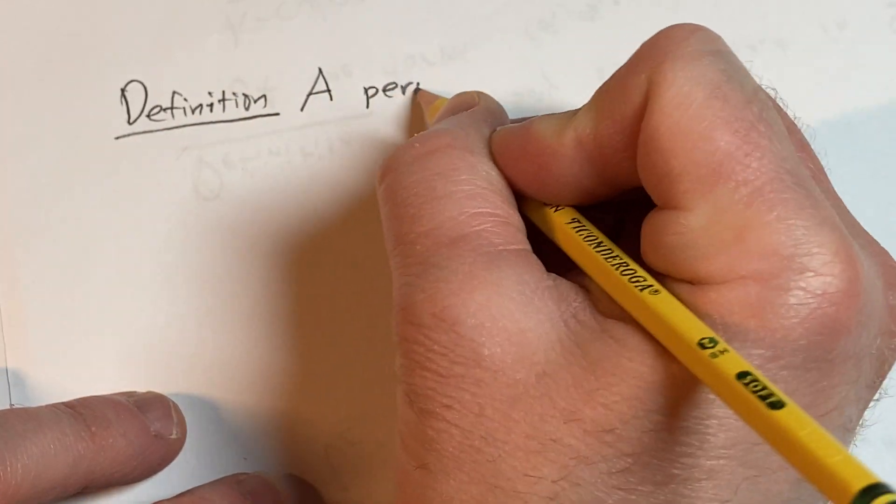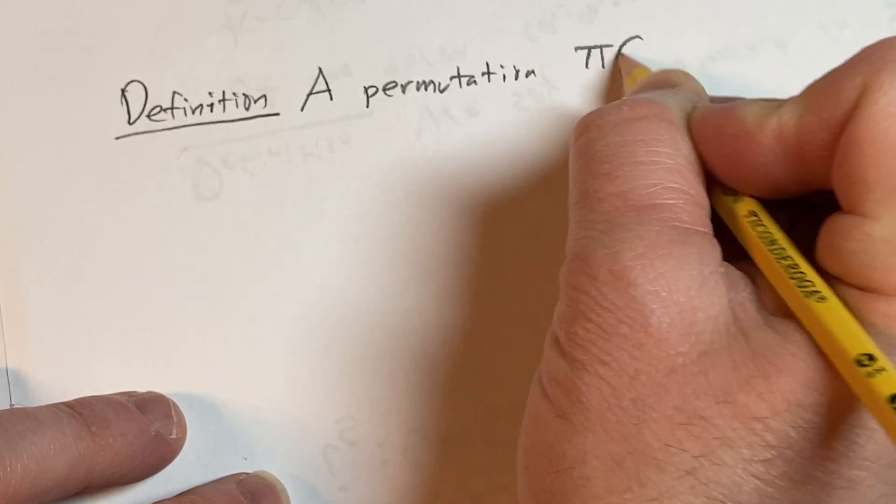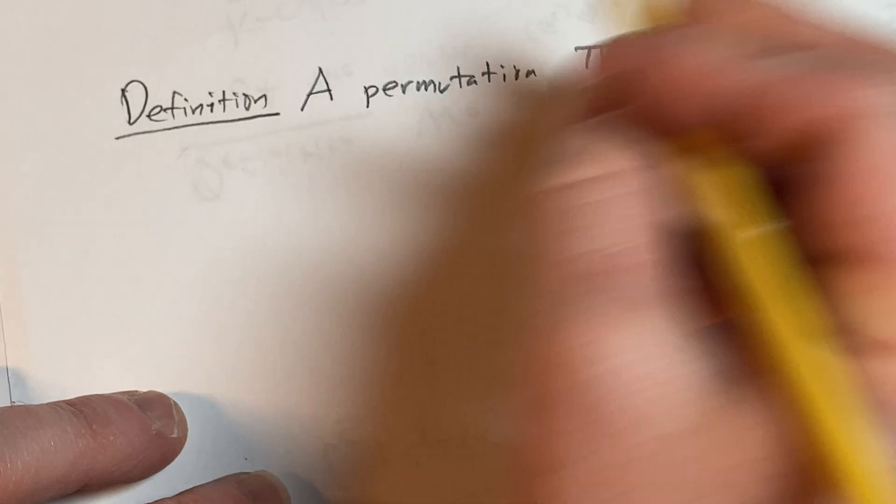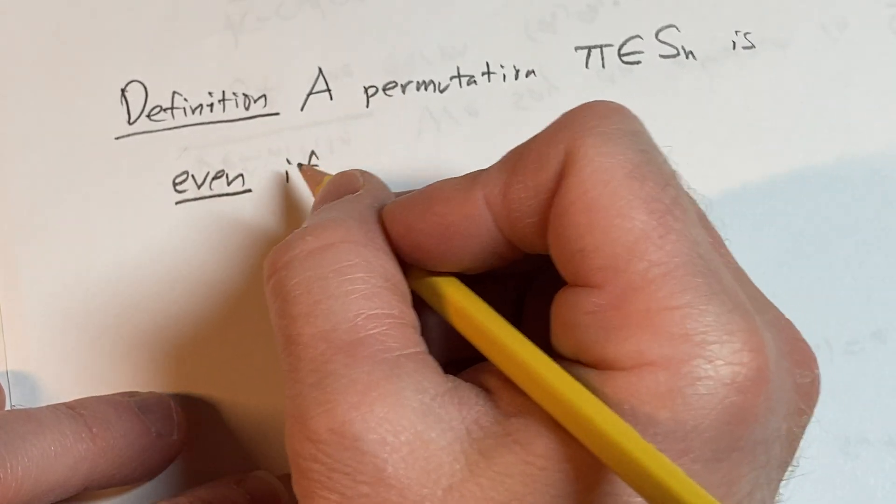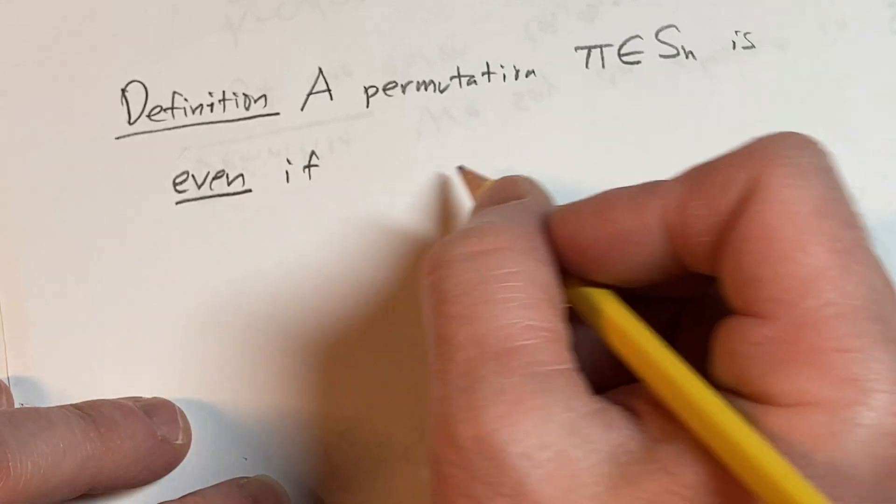A permutation, let's say pi in S sub n, the symmetric group on n symbols, is even if you can write it as a product of an even number of transpositions.